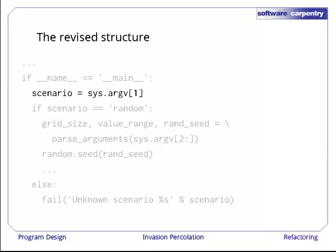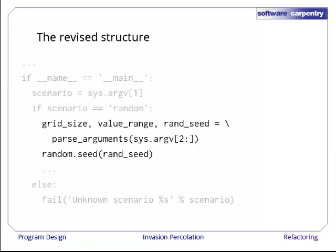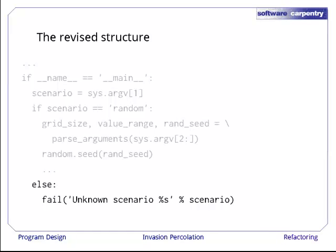And then if that value is the word random, we look at the remaining arguments to determine the grid size, the value range, and the random seed. If the first argument isn't the word random, then we fail.